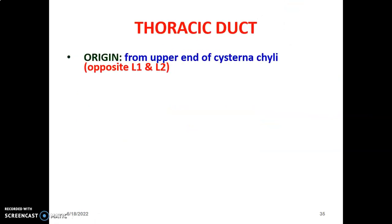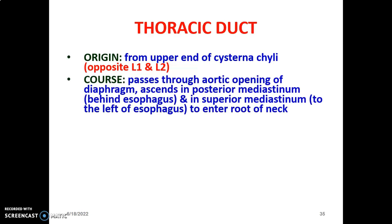We now discuss the thoracic duct, which is a lymphatic channel. It contains lymph coming from the lower portion of the body. The origin of the thoracic duct is the cisterna chyli, a cistern containing lymphatic fluid, located opposite L1 and L2. The thoracic duct originates from the upper end of the cisterna chyli, opposite L1-L2 vertebrae in the abdomen.